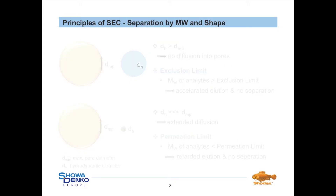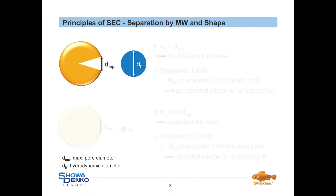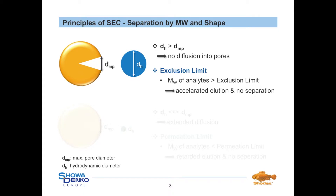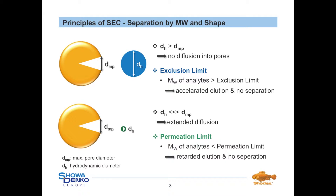When size exclusion columns have to be chosen for a certain application, several facts have to be considered. In general, for every size exclusion column the pore sizes and also the exclusion limit are given as typical characteristics. Under aqueous conditions the exclusion limit is determined by different standards like pullulan, which is an unbranched polysaccharide, and proteins. In case the compound has a bigger hydrodynamic diameter than the maximum pore size diameter, no diffusion into the pores is possible. Therefore no separation above this limit is possible. The same effect occurs when the compound has a significantly smaller hydrodynamic diameter than the smallest pore size available — in this case the compound will retain on the column much longer and ends up in a retarded elution. This limit is called the permeation limit.